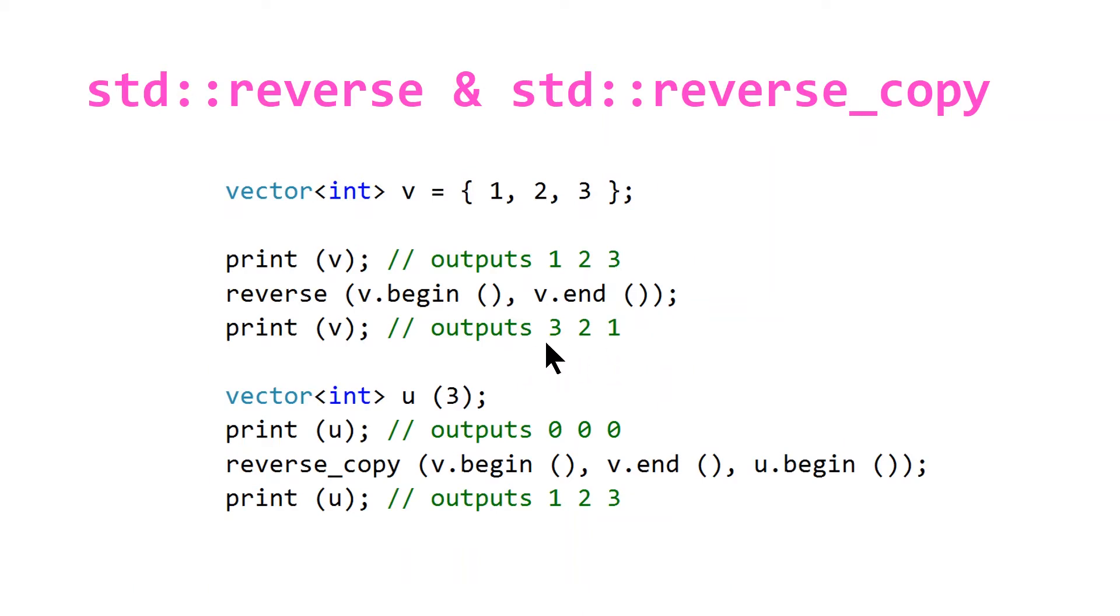And for reverse_copy it does the same thing, but here we are just declaring a vector of integers with the default value and allocating three spots for three elements.